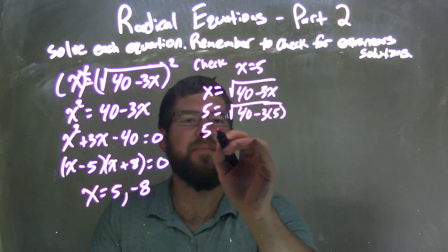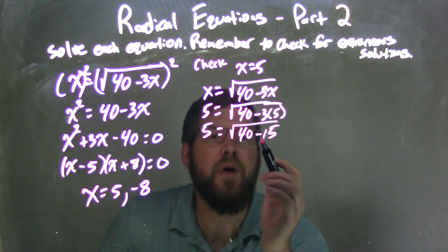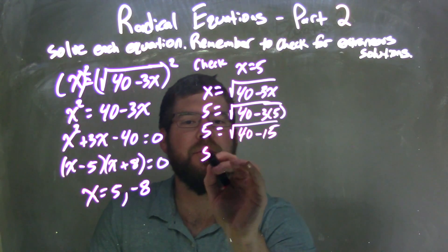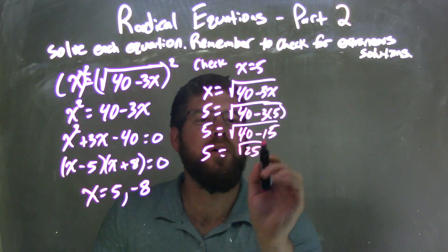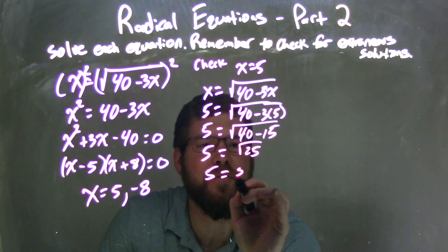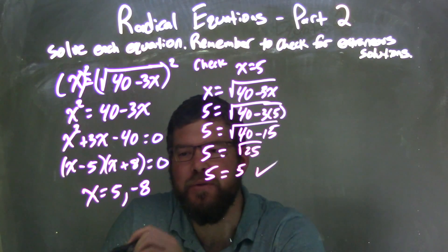3 times 5 is 15, so we have square root of 40 minus 15. 40 minus 15 is 25, so we have 5 equals square root of 25, and the square root of 25 is 5. So 5 equals 5. Fantastic. Left and right hand side are equal, making 5 a true solution.